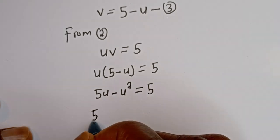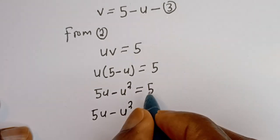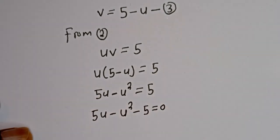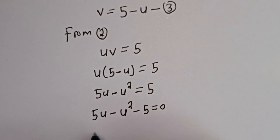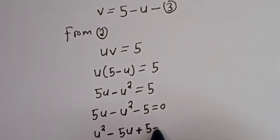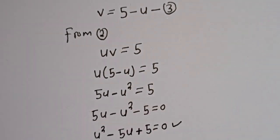We have 5u minus u squared. Let's bring the 5 to this side: minus 5 equals 0. We can rearrange this to get u squared minus 5u plus 5 is equal to 0. This is a quadratic equation, which can be solved using the quadratic general formula.